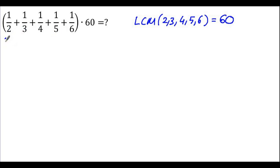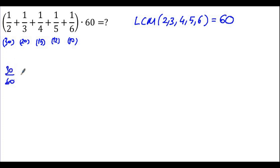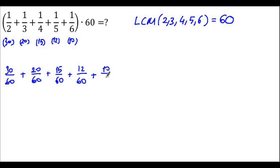To make denominators equal to 60: 2 times 30, 3 times 20, 4 times 15, 5 times 12, and 6 times 10. So we get 30 over 60, plus 20 over 60, plus 15 over 60, plus 12 over 60, plus 10 over 60. The expression then becomes that sum over 60, multiplied by 60. Now all denominators are 60.